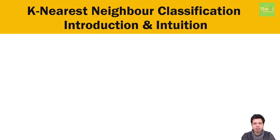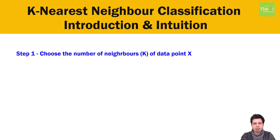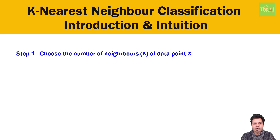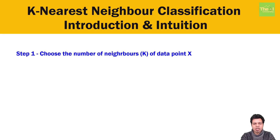I will refer to my new data point as x. Step 1: choose the number of neighbors, represented by k, of data point x. k here represents the number of neighbors this new data point x can have. This can be any value based on your business requirement — it can be 2, 3, 4, 5, or even 6 or more.